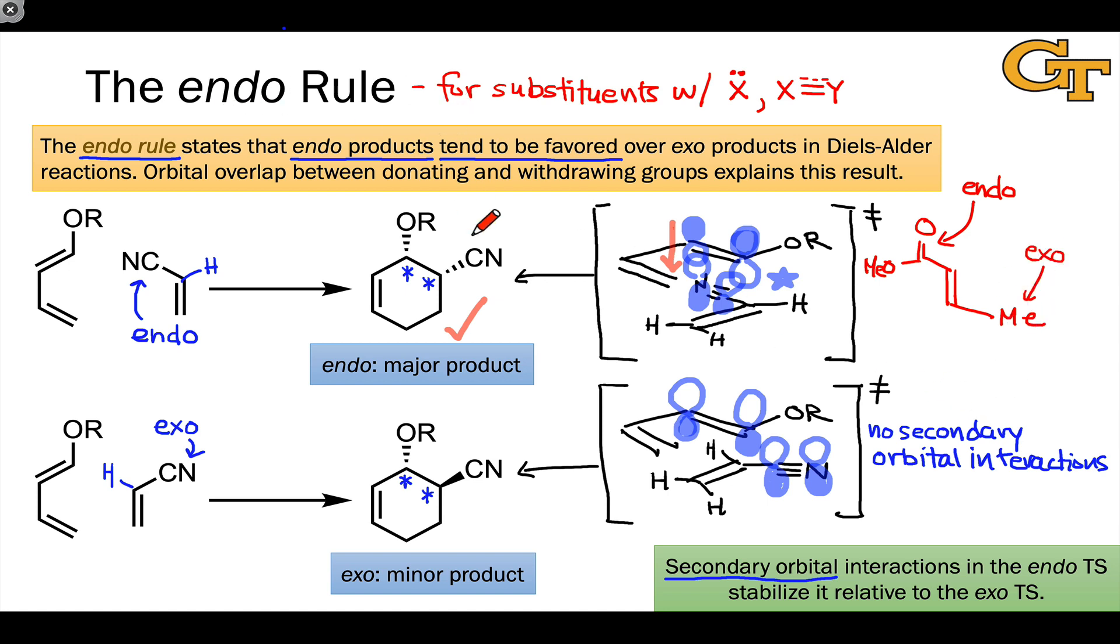By combining the endo rule with the stereospecificity rules that we looked at on the last slide, we can draw the major diastereomer of any Diels-Alder reaction given the reactants, which is a pretty powerful tool synthetically. It allows us to make deep predictions about the nature of this fairly complex product starting from much simpler reactants lacking two of the sigma bonds that we see in the product and lacking the ring structure.